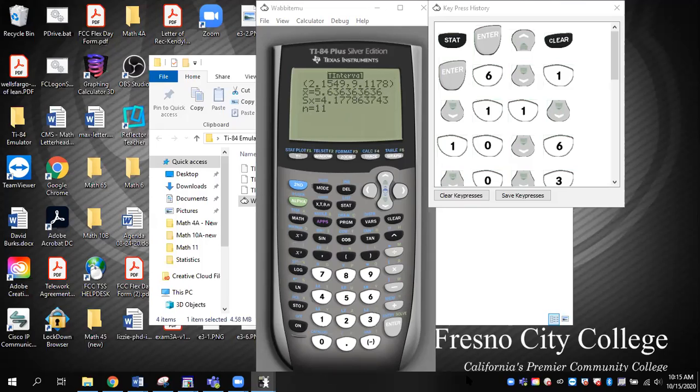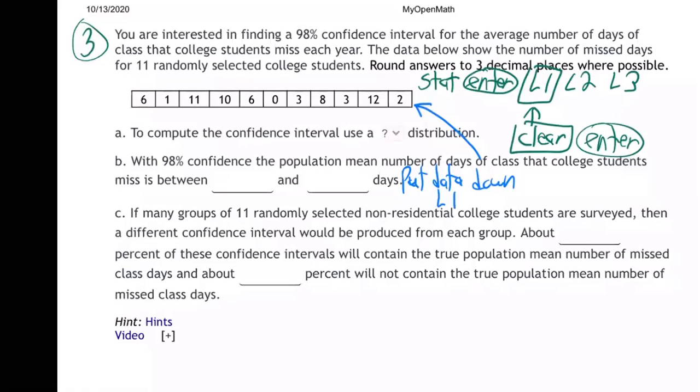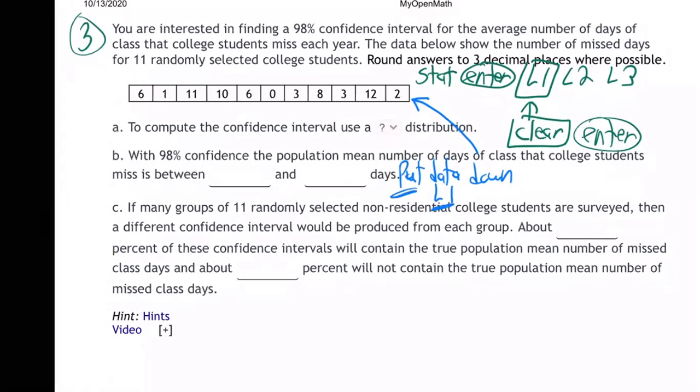So let me go back to my iPad screen and share that and I'll write out what we just did so you have it. Can you tell us how to get the data? Can you show us how to get the data from L1 into the T interval data set? Yeah, let me write it out. I'll write it out here. So we put the data in L1, put the data down L1, and then you just simply, after you've got the data down L1, all you have to do is press the stat button.